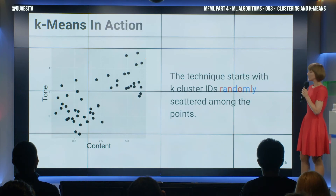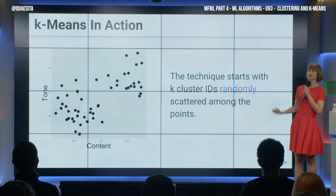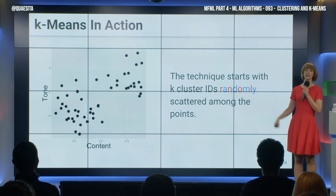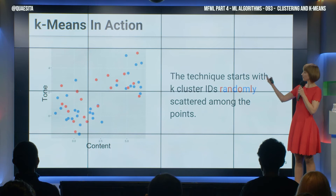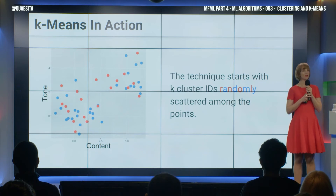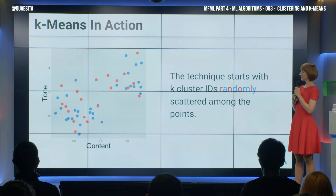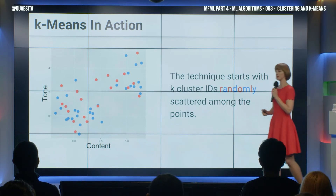The technique begins by sprinkling some labels throughout our data entirely at random. We have a blue cluster and a red cluster. What do you think of the clustering? Looks good? Nice clusters? I don't like them either. Let's compute the centroids, shall we?